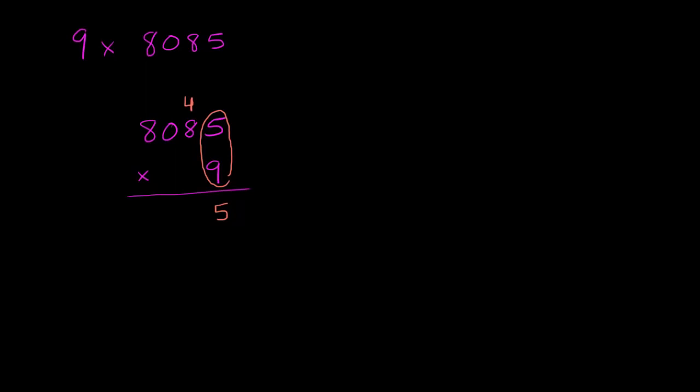Now we're ready to move on to 9 times 8. We're going to calculate 9 times 8 and then add the 4 that we just carried. 9 times 8 is 72, plus 4 is 76. We'll write the 6 in the tens place and carry the 7.